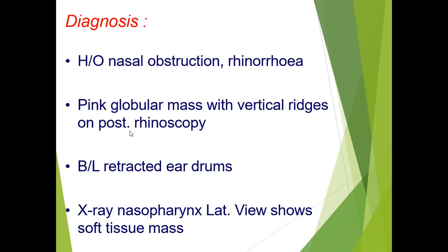To diagnose these patients: they present with nasal obstruction and rhinorrhea. On examination, you can see a pink globular mass with vertical ridges on posterior rhinoscopy. On ear examination, you can see bilateral retracted eardrums. On X-ray, the nasopharynx lateral view shows a soft tissue mass filling the nasopharynx.